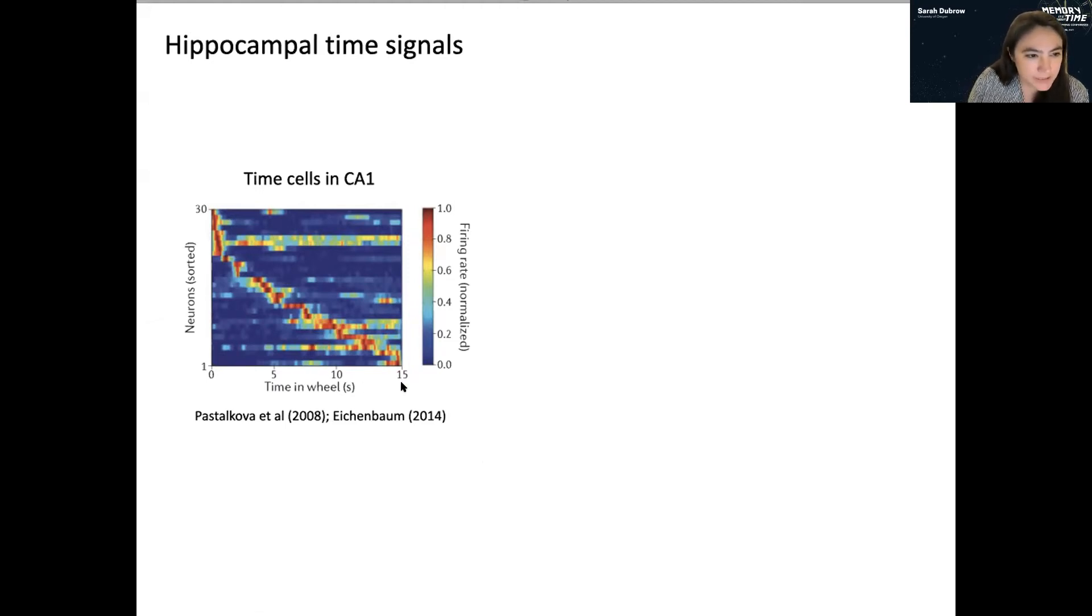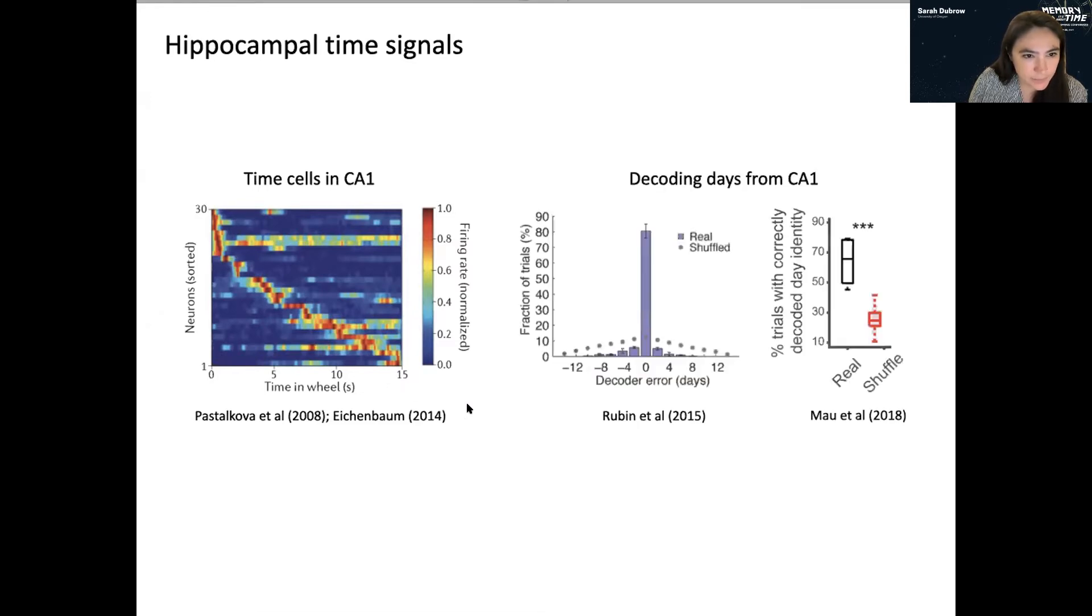However, there is some promising data that shows that this does scale. So, for example, in the same region in CA1, you can, from place cells, decode relatively precisely what day the neural recordings are from. And more recently, it's been shown that just looking at the population of cells that encode this fine grained temporal information can also be used to decode this coarser grained temporal information on the order of days.